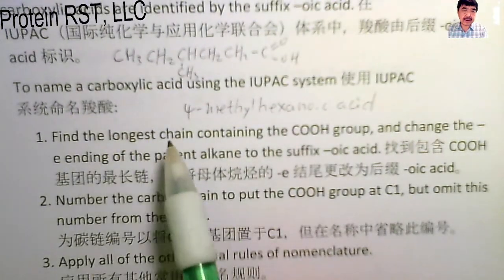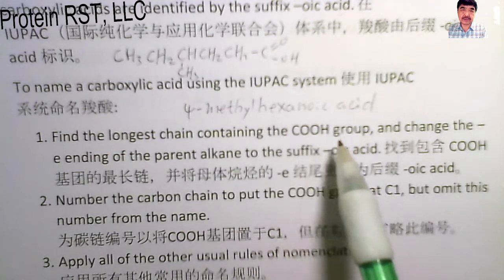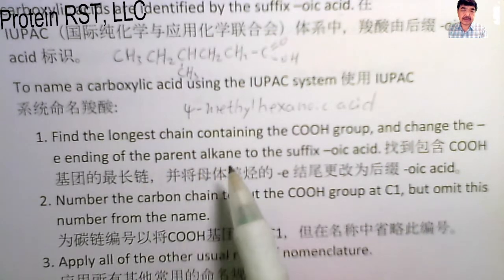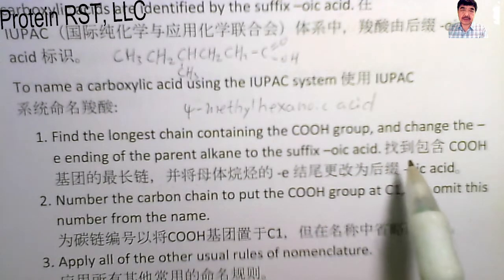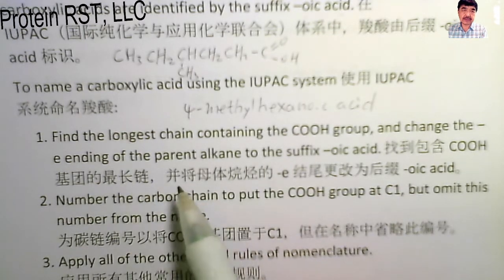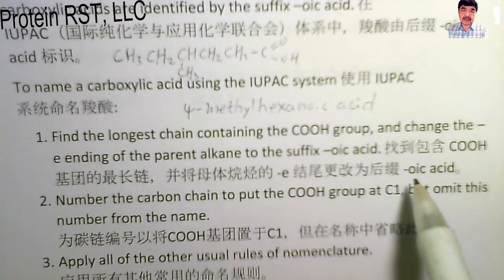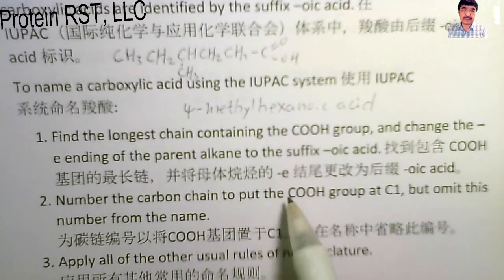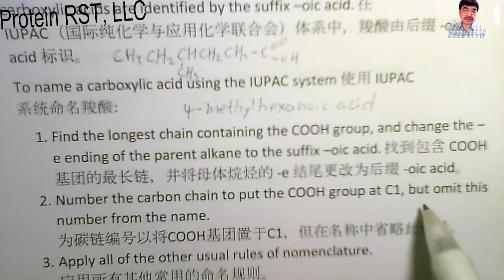The first step: find the longest chain containing the carboxylic group COOH, then change the '-e' ending of the parent alkane name to the suffix '-oic acid.' After that, name the carbon chain that contains the carboxylic group. The second step: find C1, but omit this number from the name.